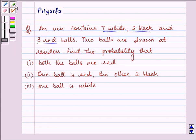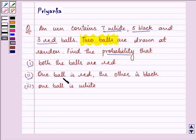2 balls are drawn at random. Find the probability that firstly, both the balls are red. Secondly, one ball is red, the other is black. Thirdly, one ball is white.